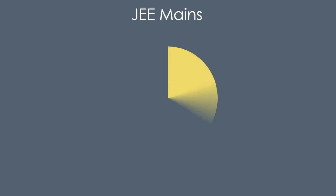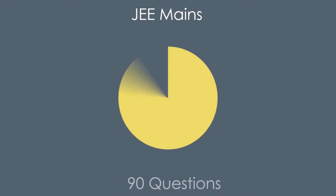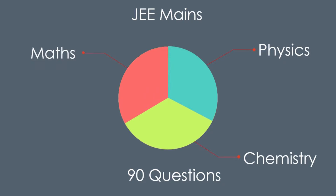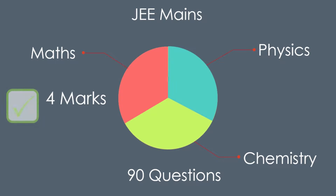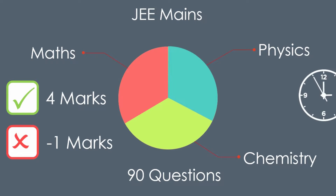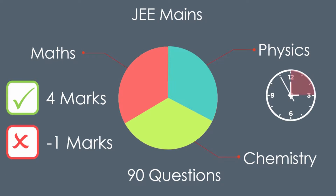JEE Mains is a single paper in which around 90 questions are asked from Physics, Chemistry and Mathematics in equal proportions. Each question carries 4 marks with minus 1 on every wrong question. Duration of exam is 3 hours.